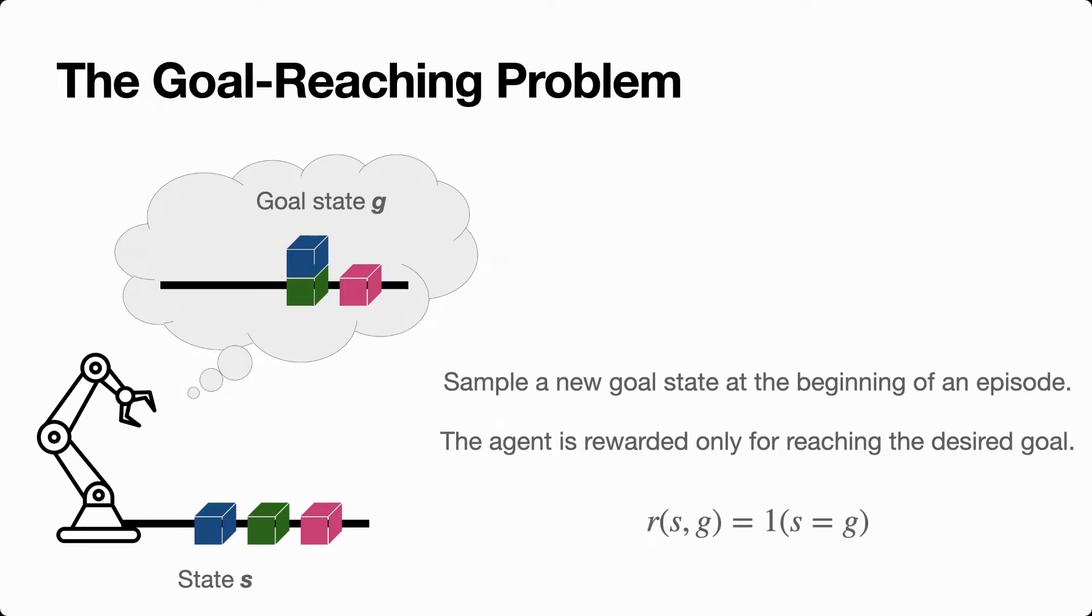This problem encapsulates a number of useful applications, especially in robotics. For example, a robot that navigates a maze might want to reach all possible goal locations. A household robot that needs to do chores can have chores specified as goals. If the robot must set a dinner table, the goal can be an image of a pre-arranged dinner table. If the robot needs to clean the room, the goal can be set to a picture of a clean and tidy room. So this goal-reaching problem is actually a pretty broad and important problem.